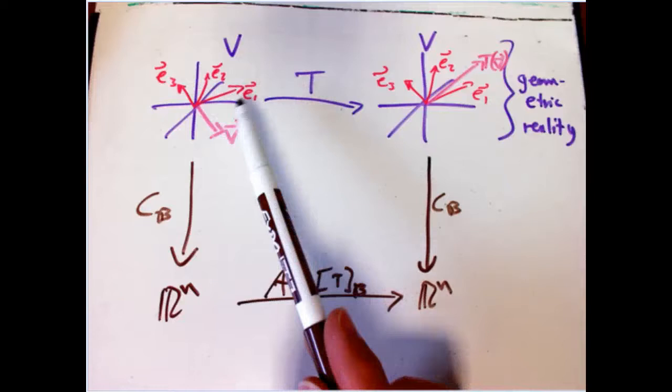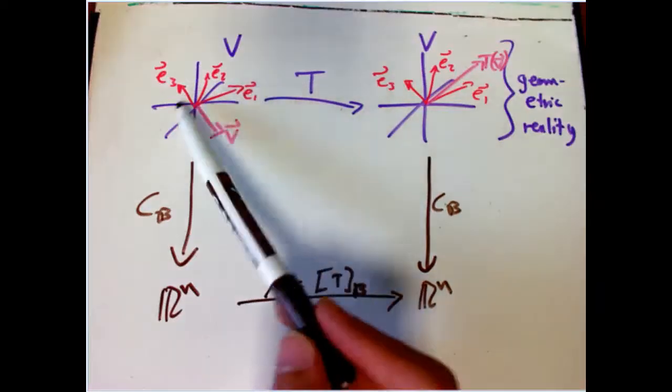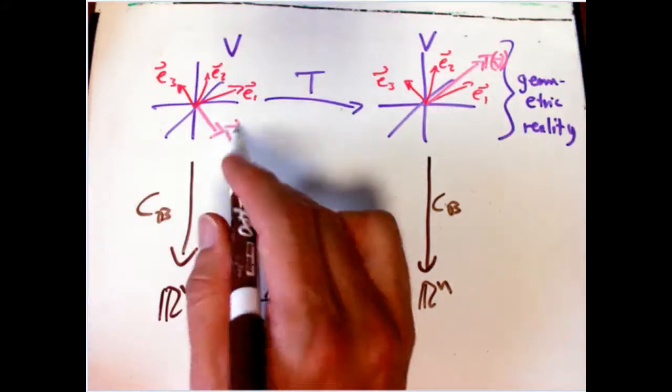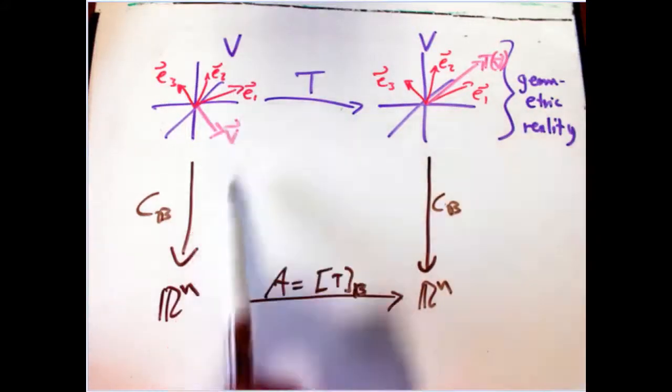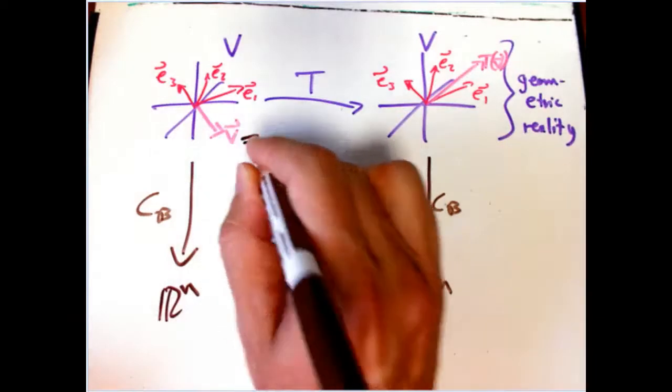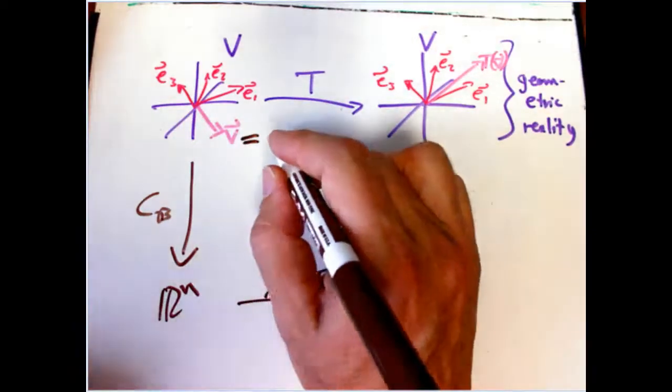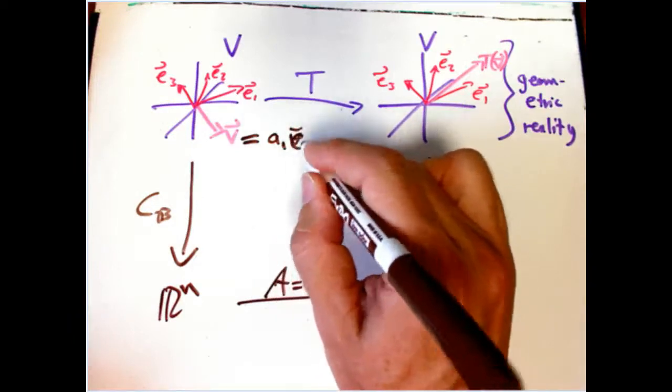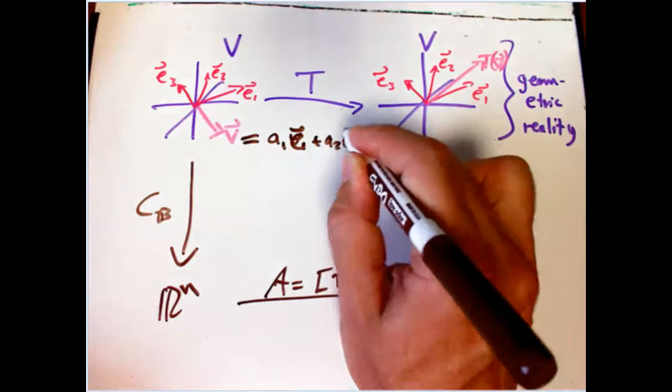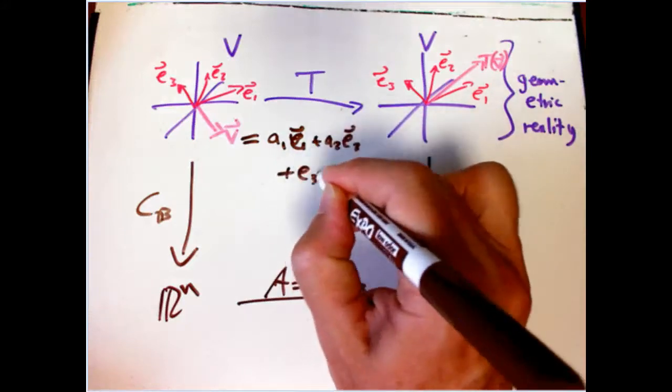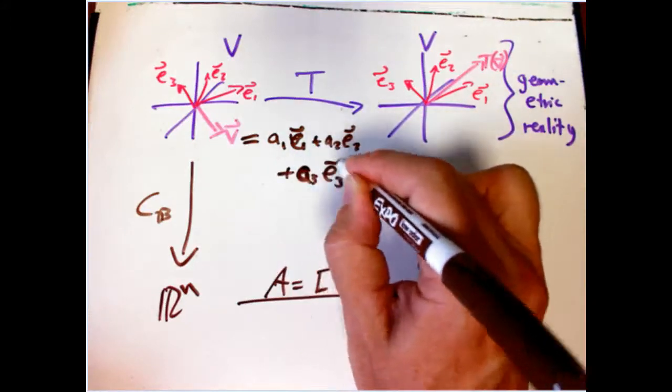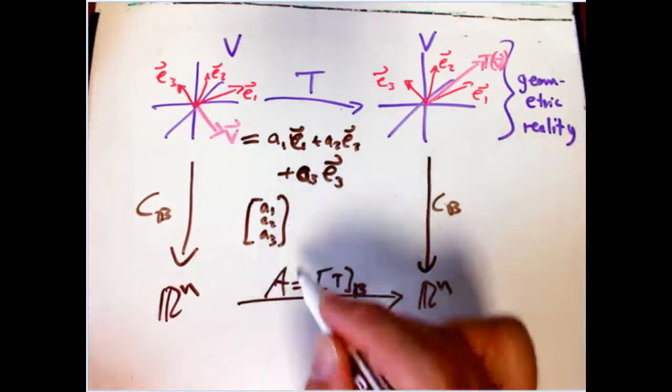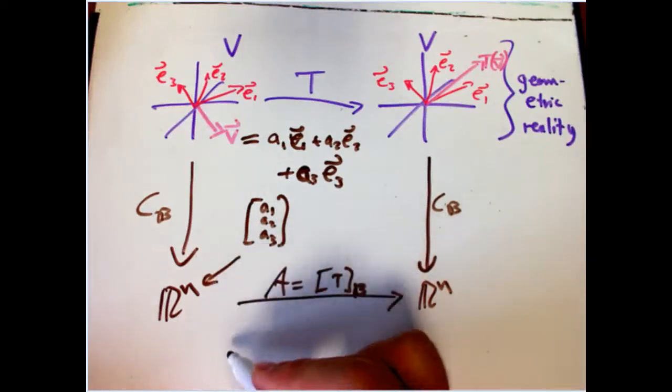Now, to do explicit calculations, we often do want to do things in coordinates. And what do we use this basis for? Very often what we use the basis for is we take this basis and we express V and we map it to Rn by saying V is, let's say, A1 V1, or sorry, E1, plus A2 E2, plus A3 E3. And so that gives us an n-tuple in general, in this case, a triple of numbers, A1, A2, and A3, and that is what lives in Rn.